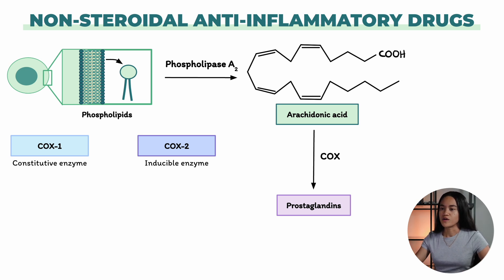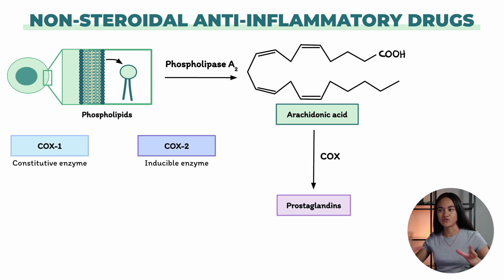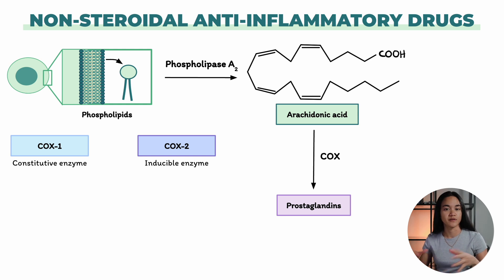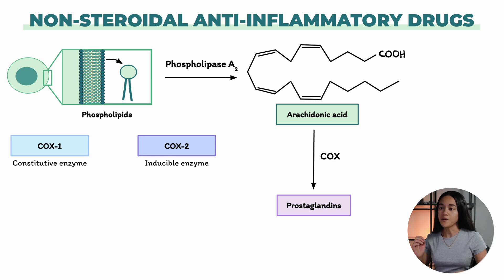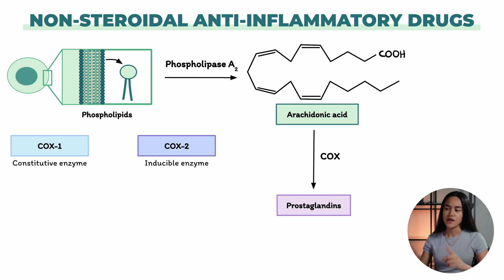COX-1 is the constitutive enzyme — the housekeeper enzyme. It handles roles like protecting the stomach lining and supporting blood flow. COX-2 is the inducible enzyme that is upregulated during inflammation, so it produces prostaglandins involved in swelling and pain.